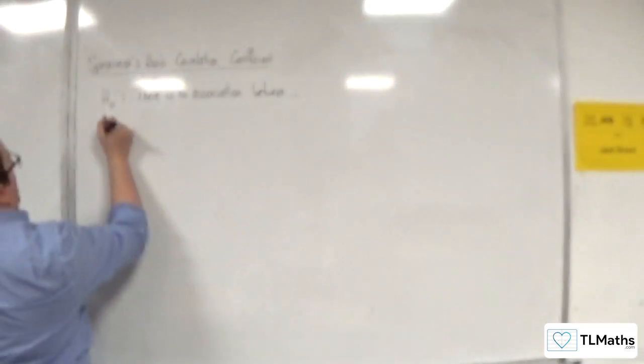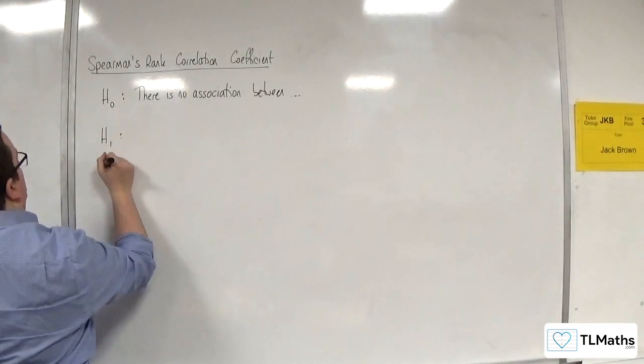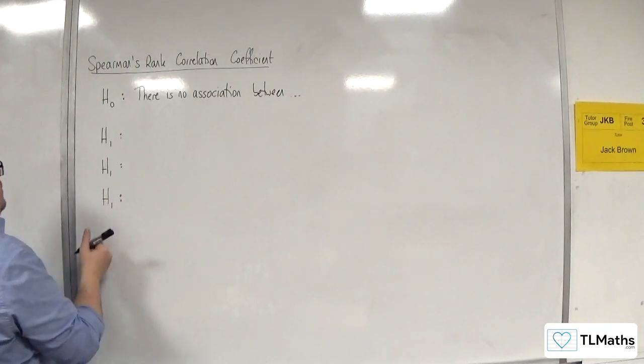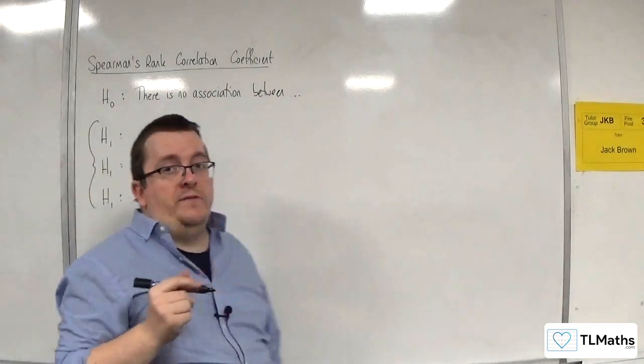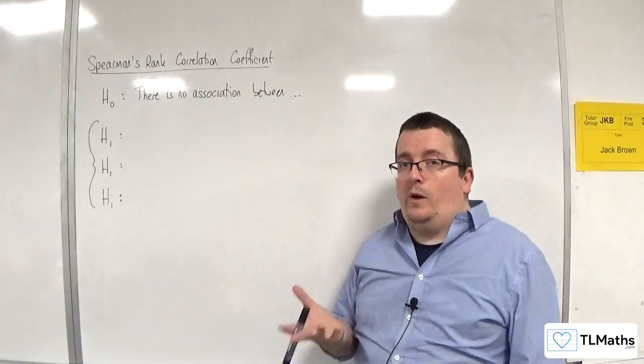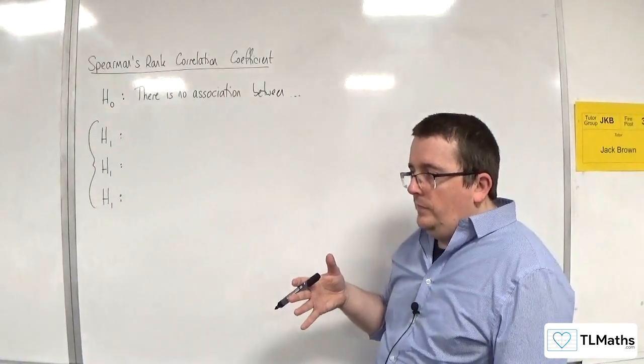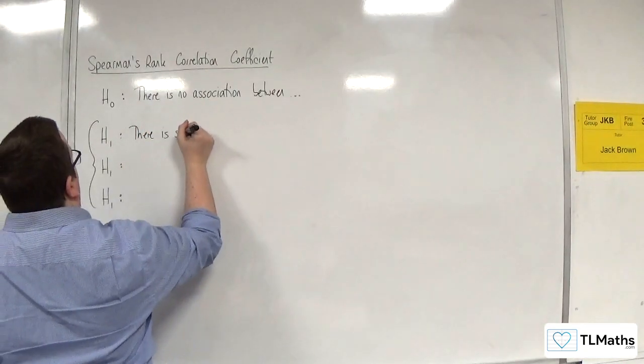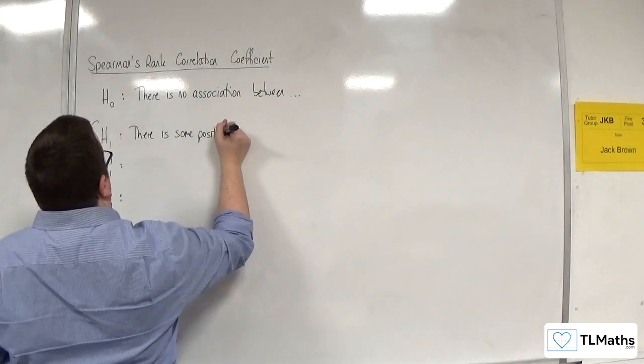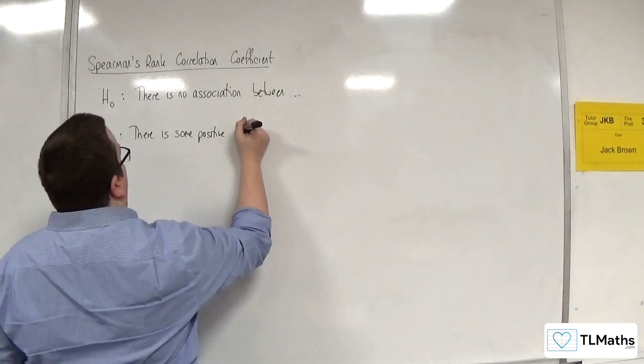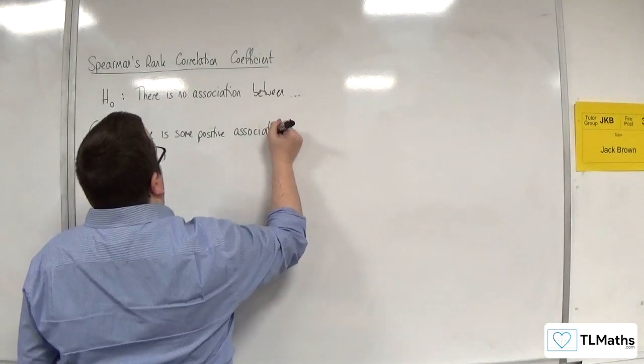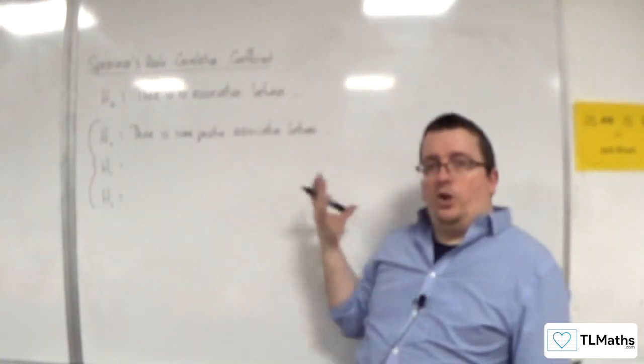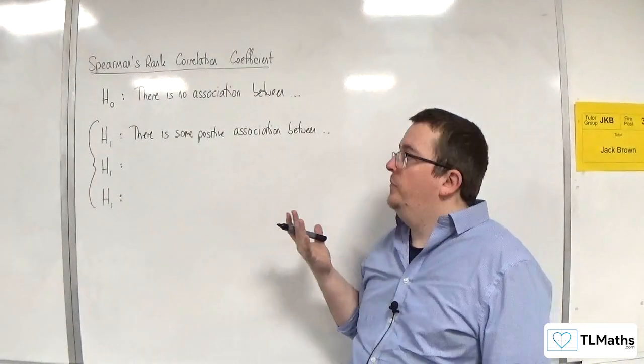There are three alternative hypotheses that we can work with, in exactly the same way as there are three alternative hypotheses for the PMCC as well. The first one is that there is some positive association between, in context, the scores of the two judges.